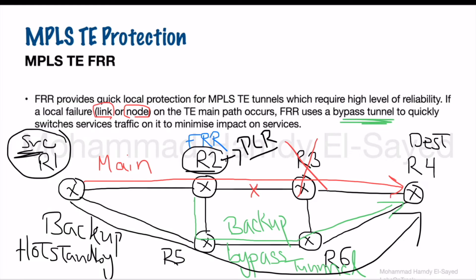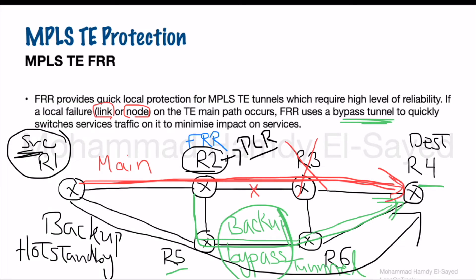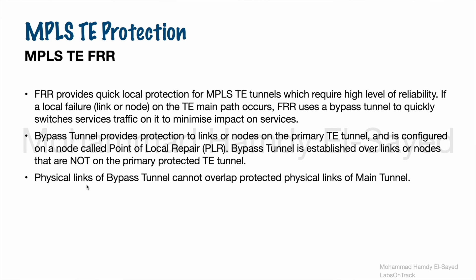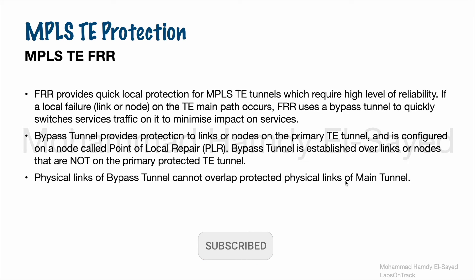Here, R2 is the PLR node — the point of local repair — configured to protect the primary TE tunnel. It has a bypass tunnel shown in green via R2, R5, R6, and R4. The bypass tunnel must be configured over links and nodes that are not on the primary path, which goes from R1 to R2 to R3 to R4. Physical links of the bypass tunnel cannot overlap the protected physical links of the main tunnel.